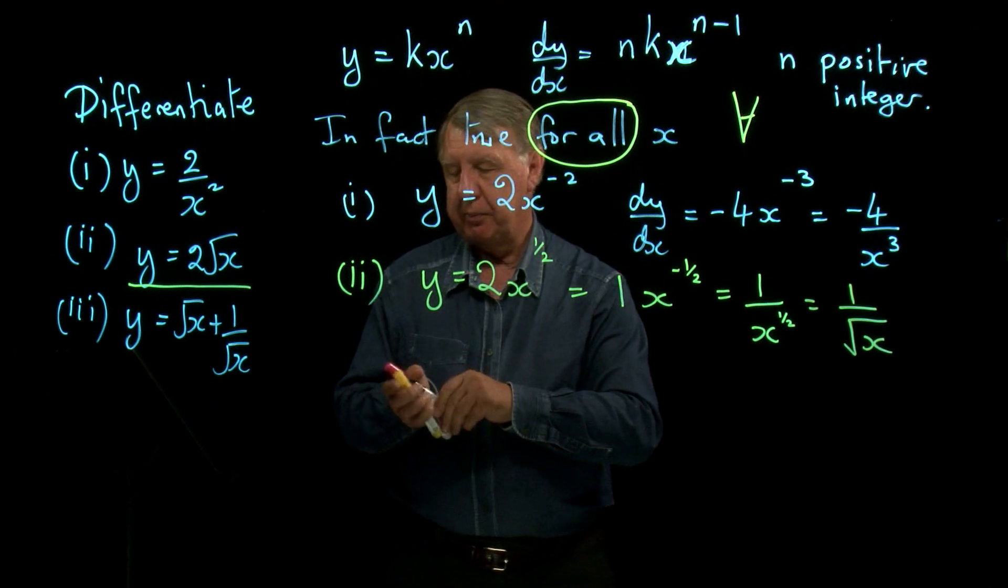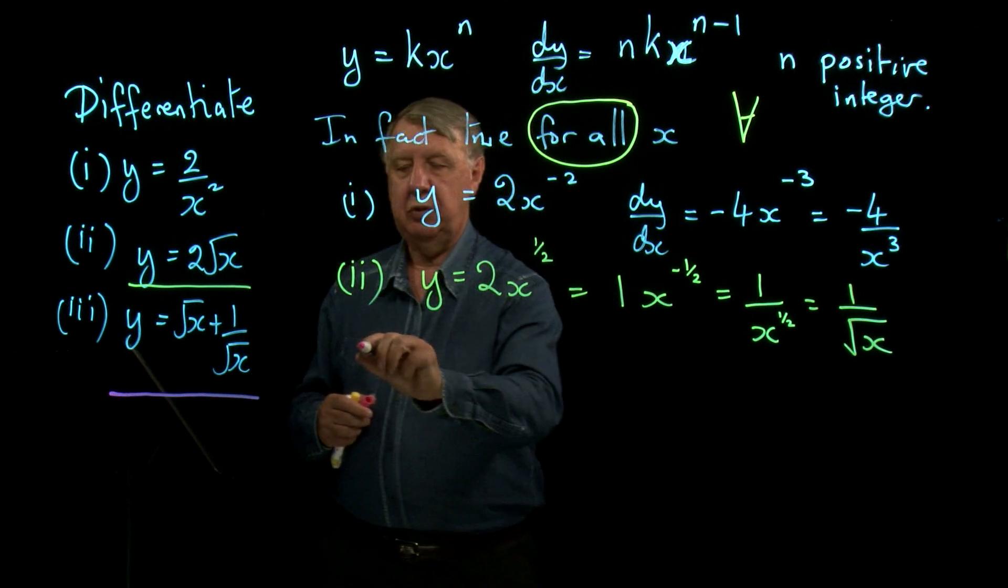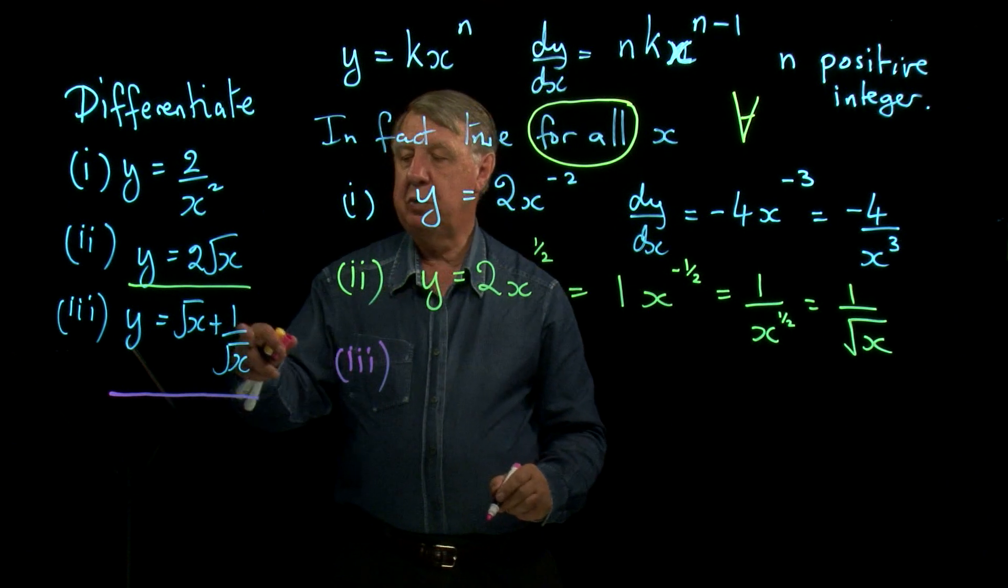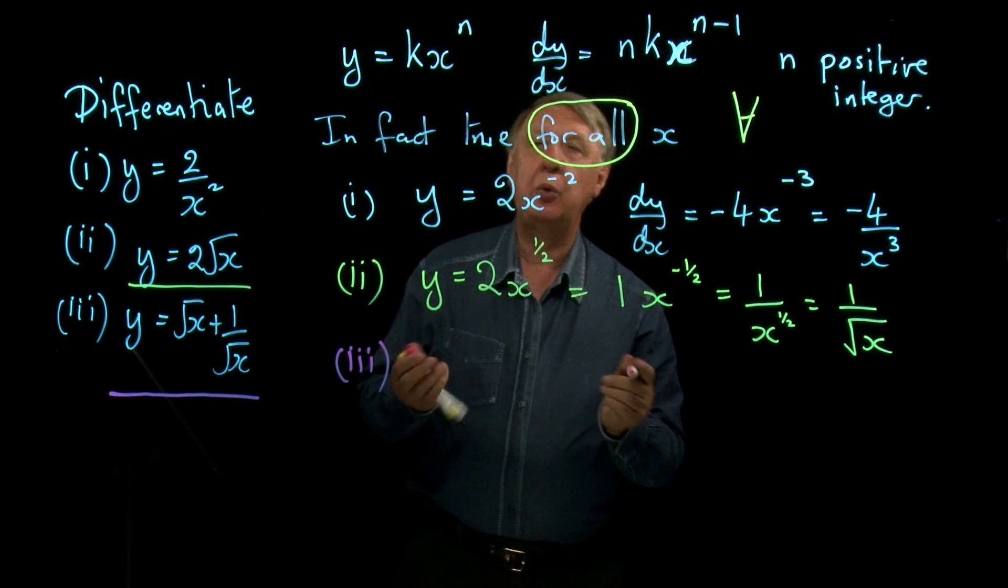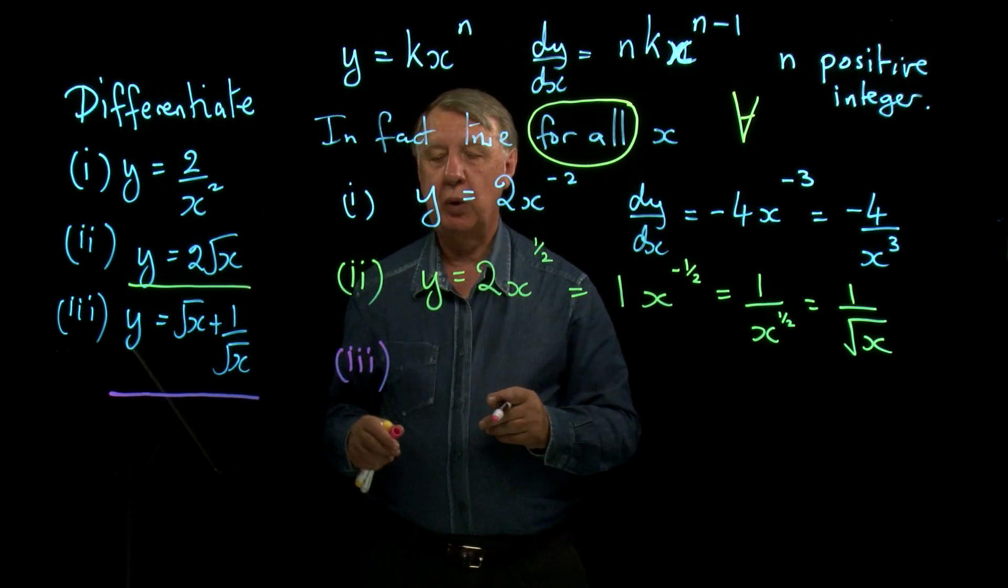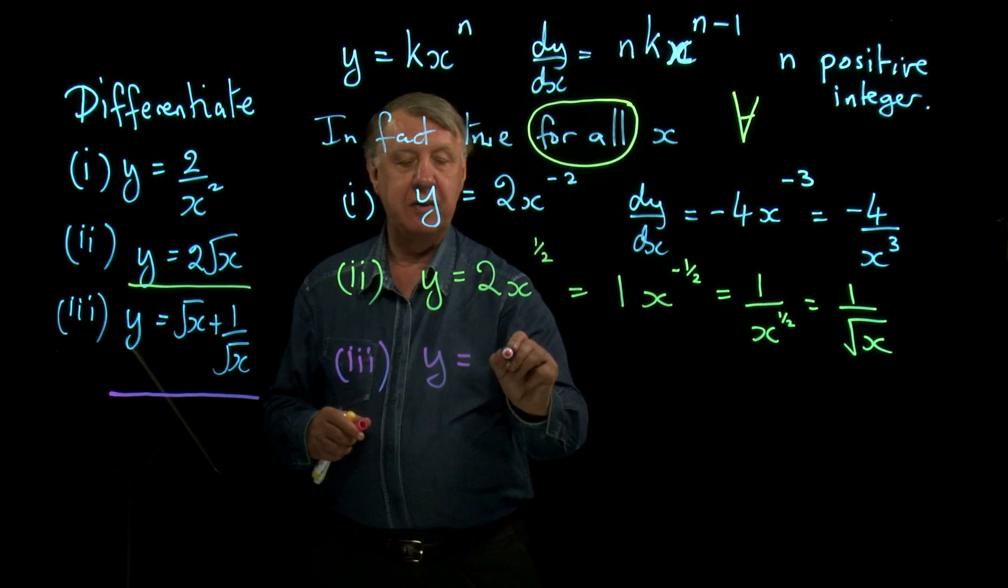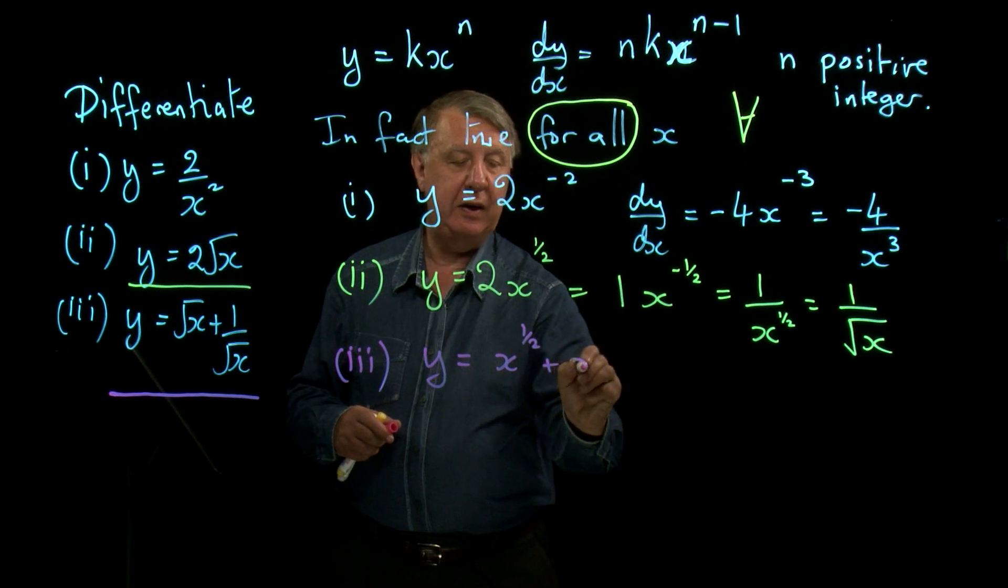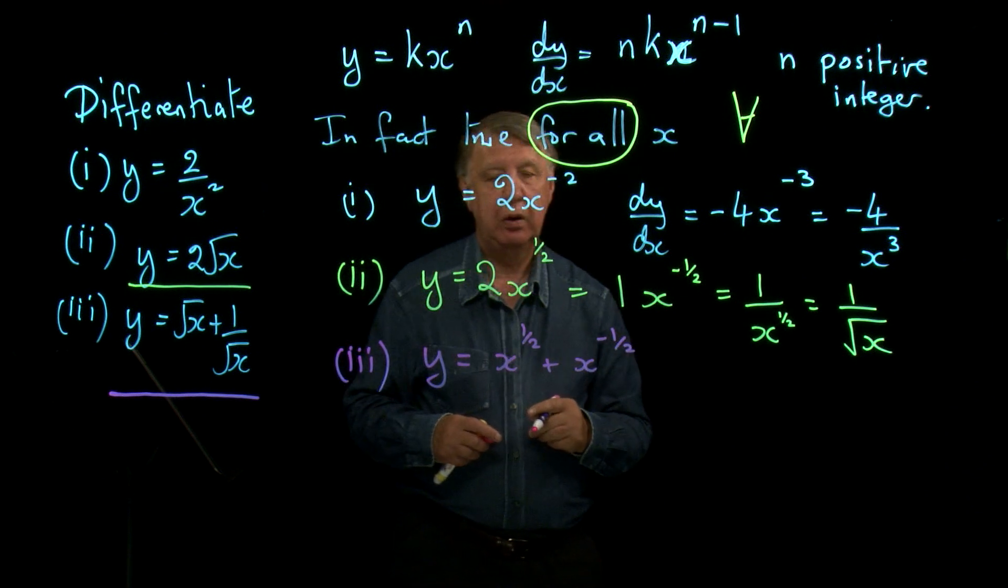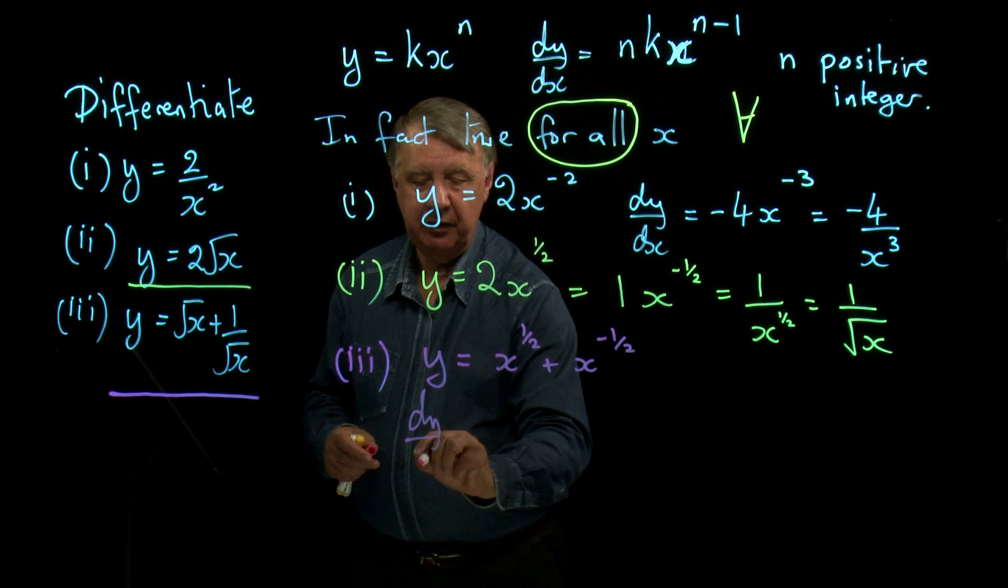And then finally, slightly more complicated function, let's call this the pink function. Two things added together. We know all about how to do that. You do it term by term. First of all, root x, then 1 over root x. So we need to write that as x to the half, plus x to the minus a half. Do the differentiation. I think I need to go down here rather than alongside.